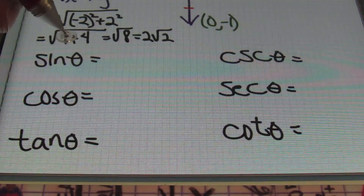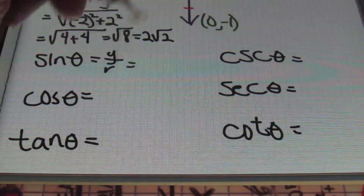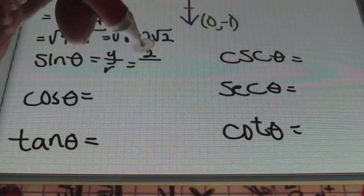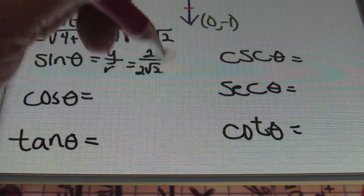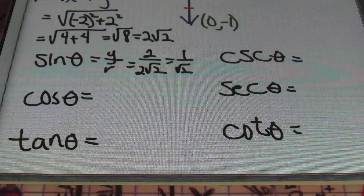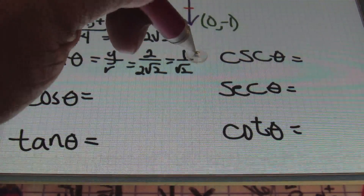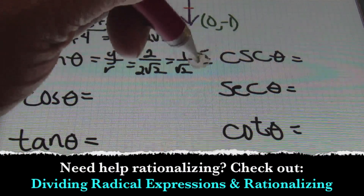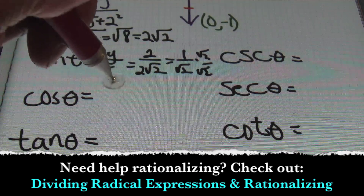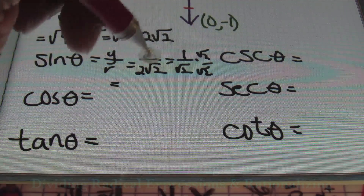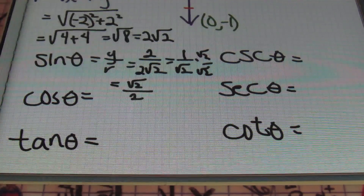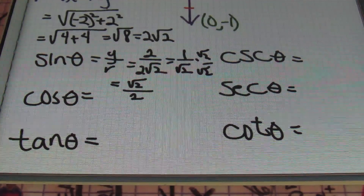Coming up with my sine theta value, remember it's going to be y over r. I'll have my y value as two and my r value as two square root of two. This simplifies to give me one over the square root of two. We won't be leaving a radical in the denominator, so I'll need to rationalize that by multiplying by the square root of two over the square root of two, and one times the square root of two is going to be the square root of two, all over square root of two times square root of two, which is two. So that's my value for sine.